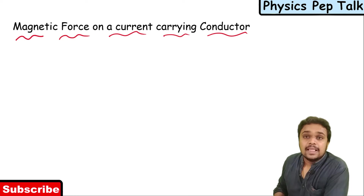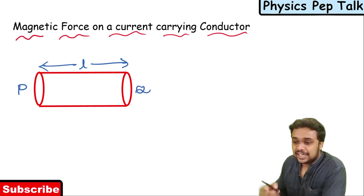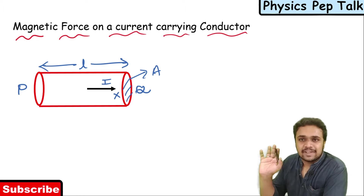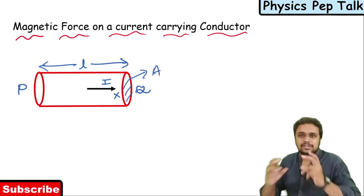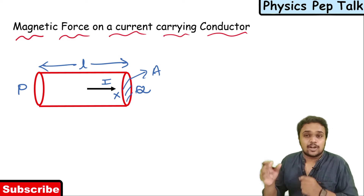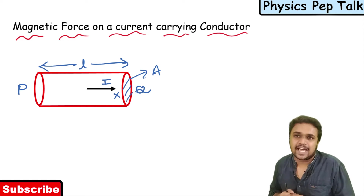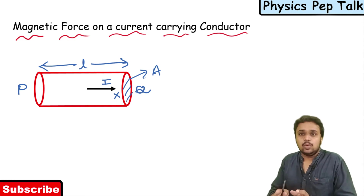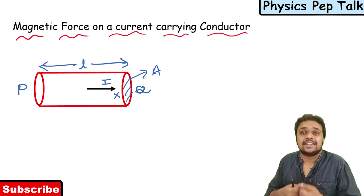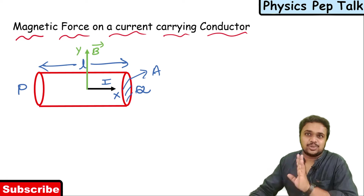This is an important derivation. Let me consider a conductor PQ of length L and cross-sectional area A, carrying a current I in the positive x-axis direction. I will place this conductor in a magnetic field such that the magnetic field is passing through this conductor in the positive y direction, as shown in this figure.